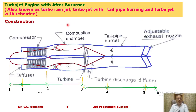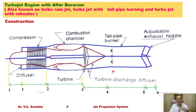The construction of the turbojet engine with afterburner is as follows. It has the following components: diffuser, compressor, combustion chamber, turbine, turbine discharge diffuser, tailpipe burner (also called afterburner), and adjustable exhaust nozzle.